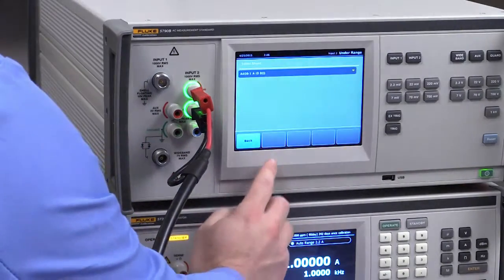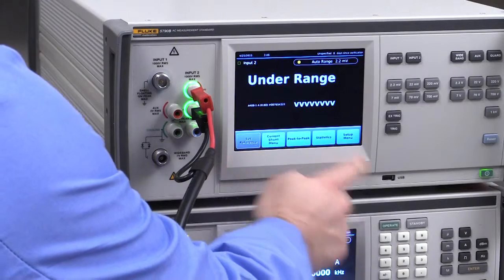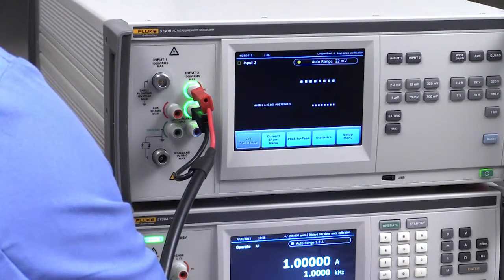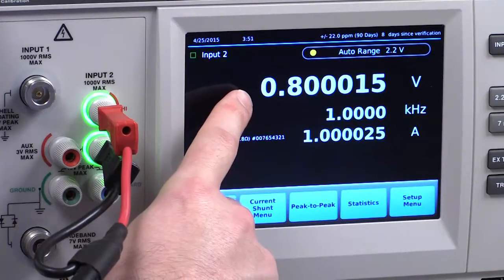you can quickly connect a shunt to the 5790B and select it by opening the shunt library and finding the shunt by its range and serial number.